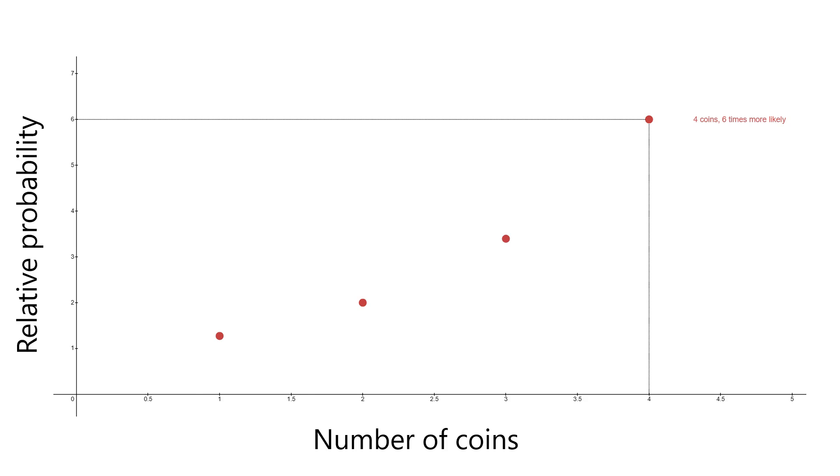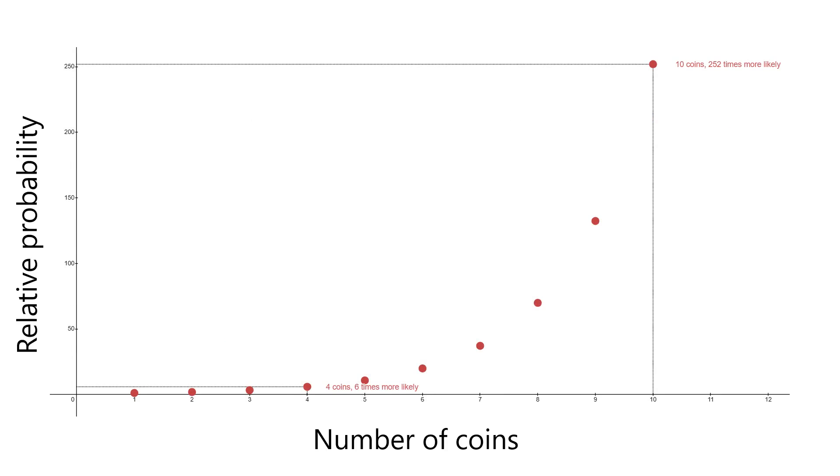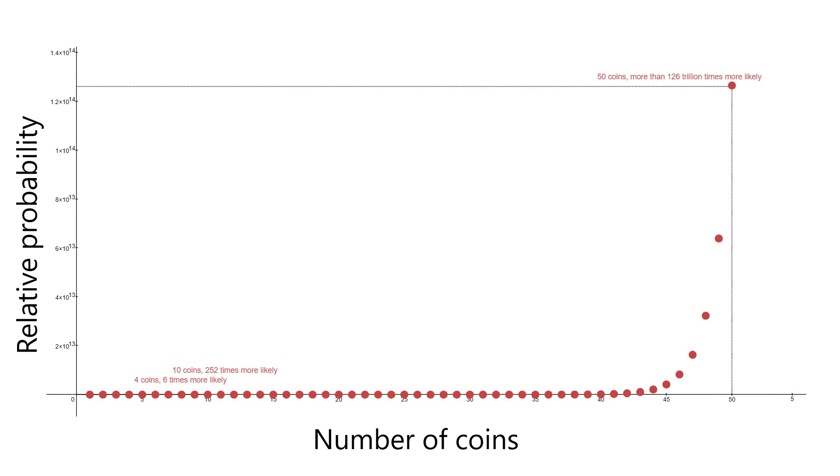If we extend this thought experiment to 10 coins, then 50% of the coins landing heads up is 252 times more likely than 100%. If we extend this to 50 coins, then this factor becomes over 126 trillion times more likely. What happens if we extend this concept to billions of coins? Thermodynamics treats atoms as coins and studies the consequences of this phenomenon in physical systems.